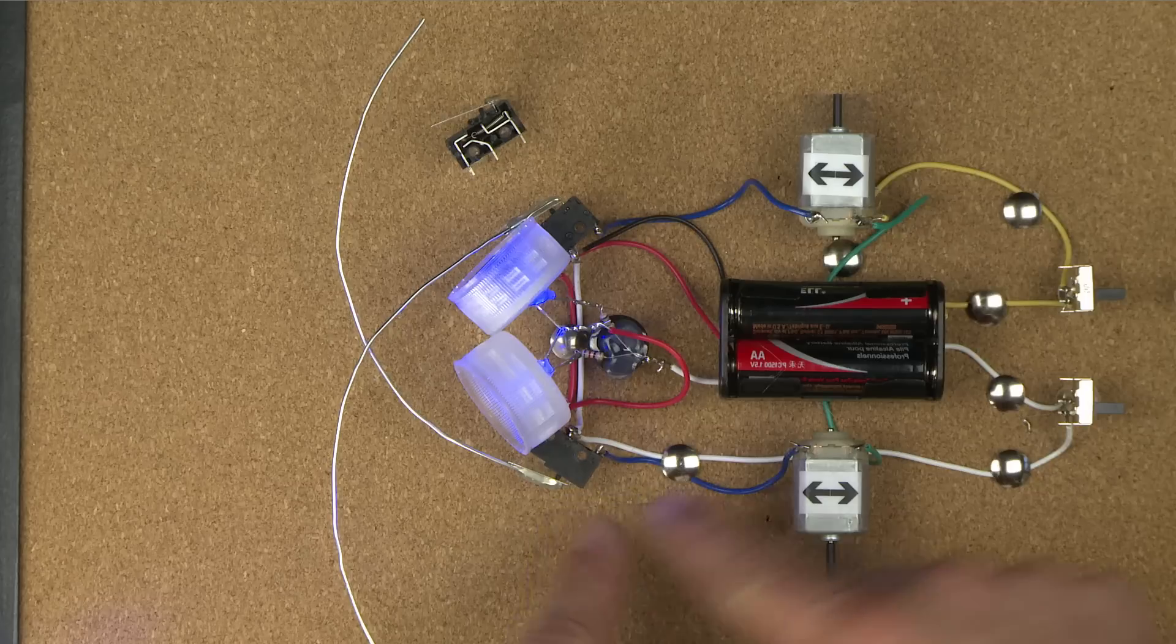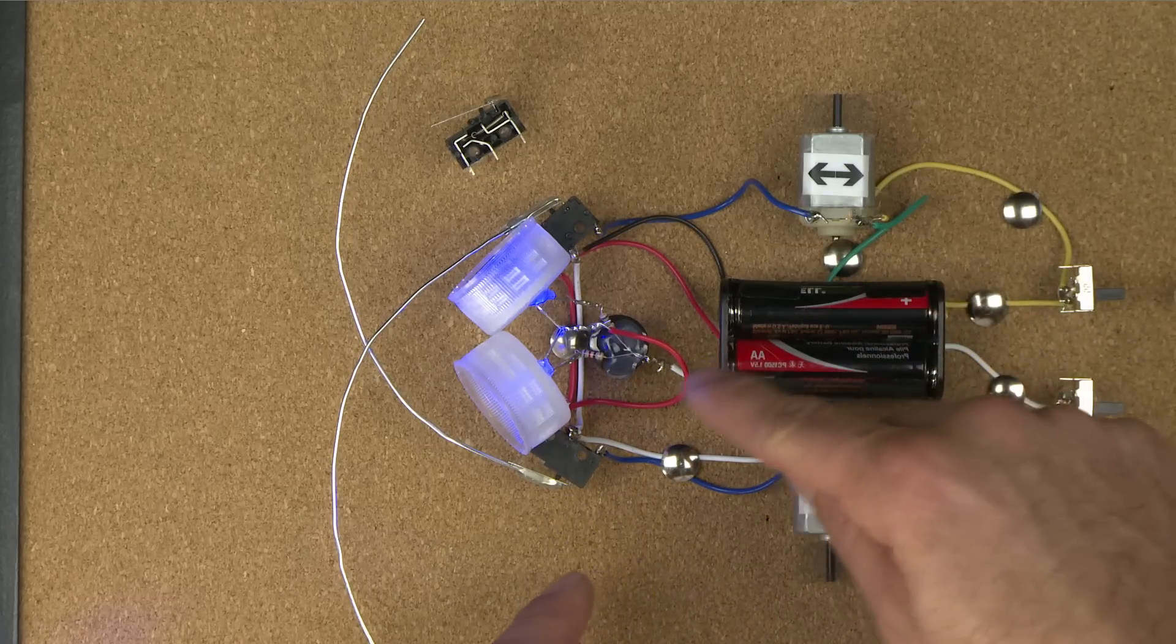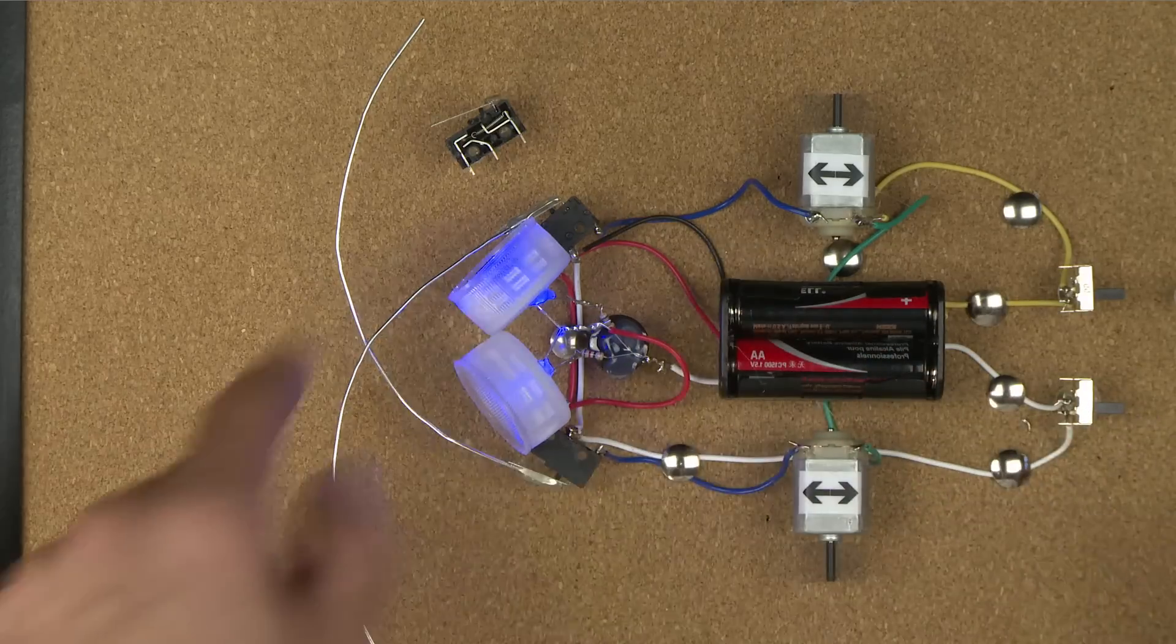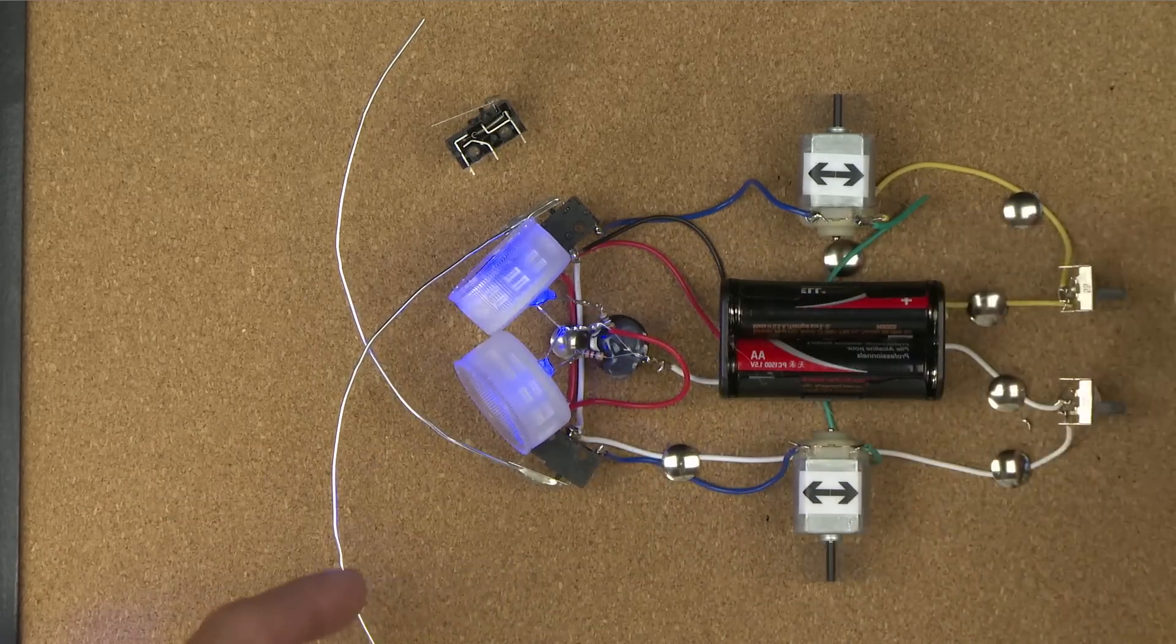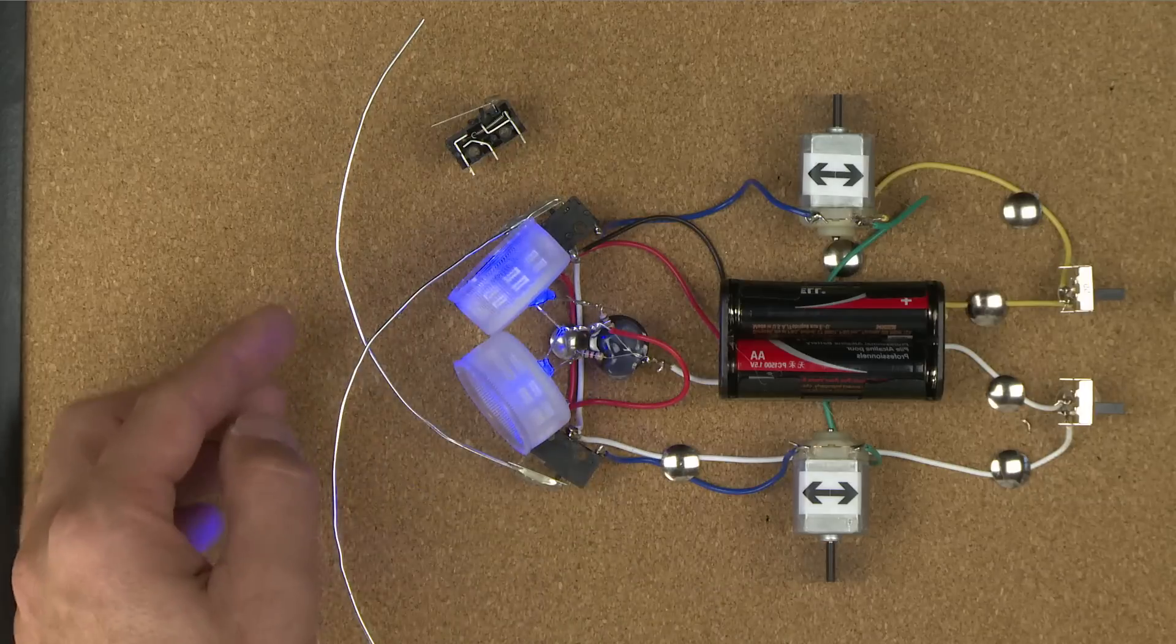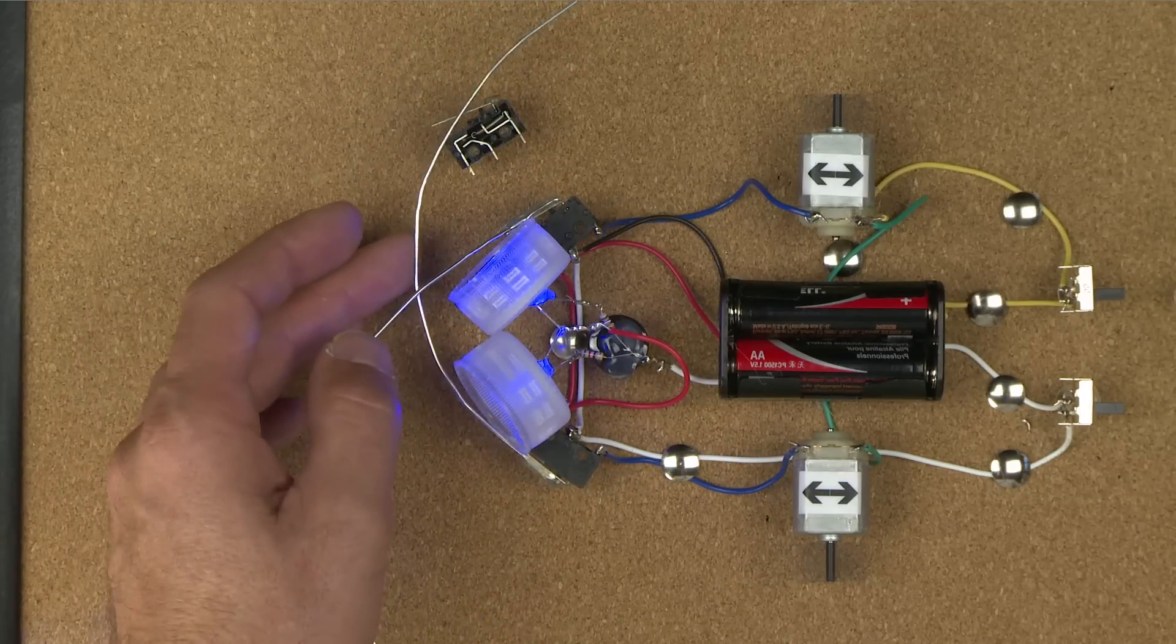Again, so what the switch is doing is it's switching the power flowing from one battery. Right now it's flowing from one battery in one direction. Switches it to the other battery that's flowing in the other direction and causes the motor to spin backwards, which means that the spout can back up.